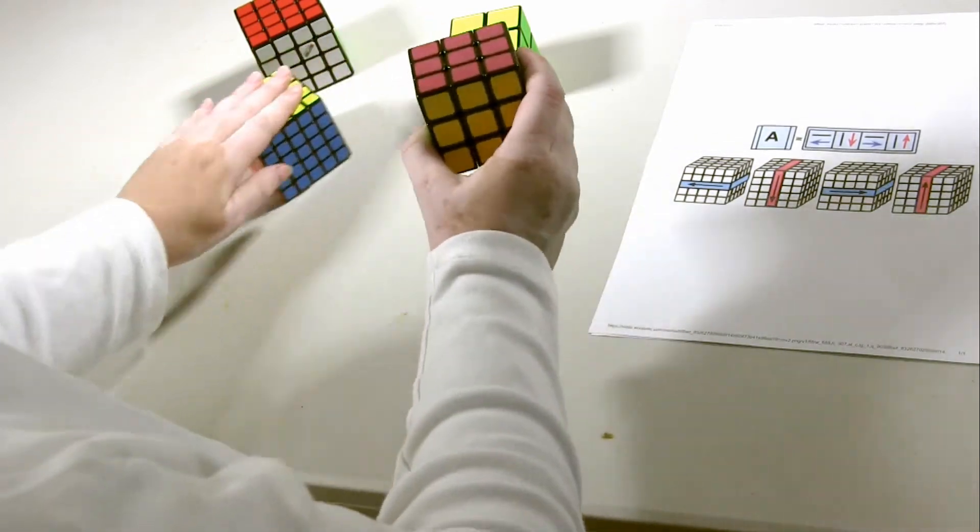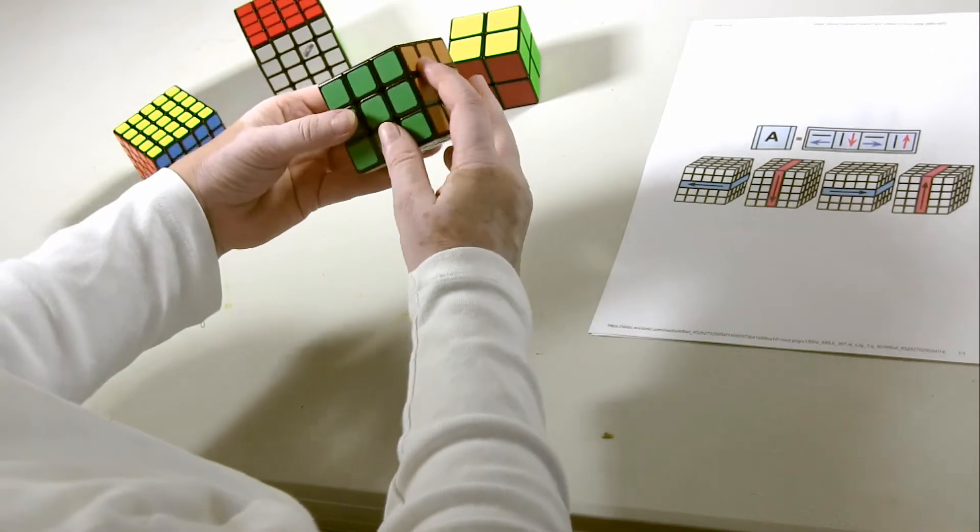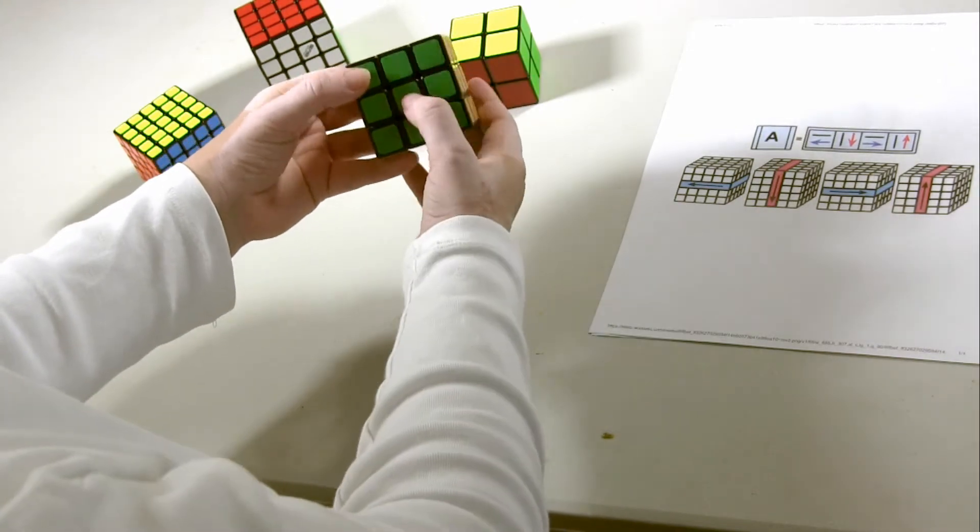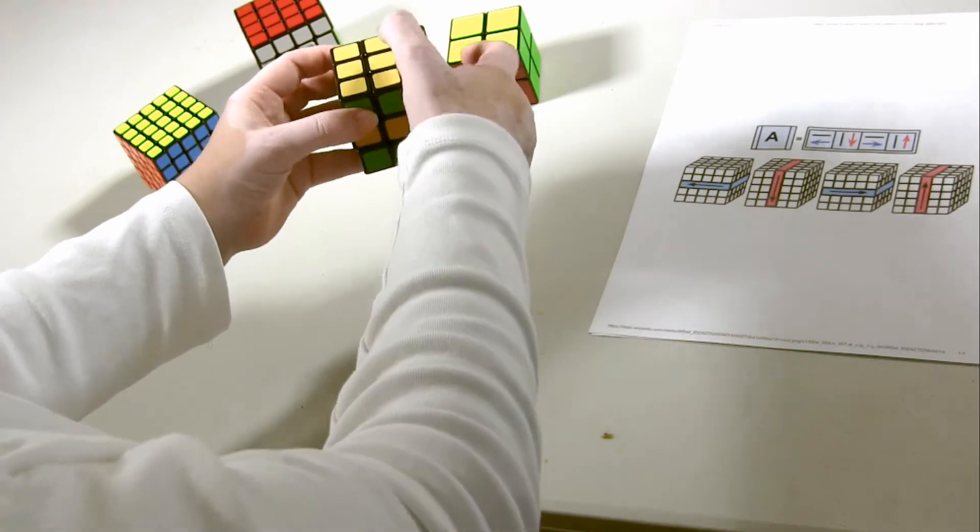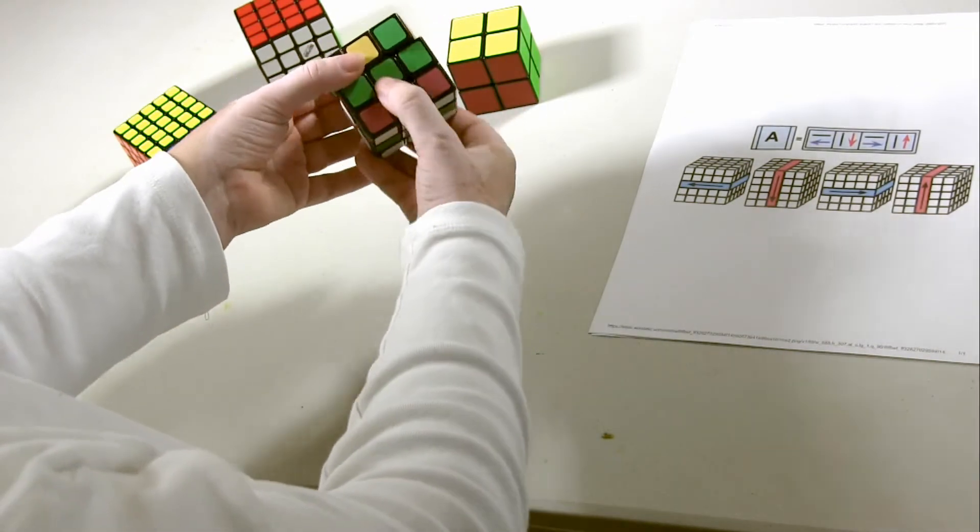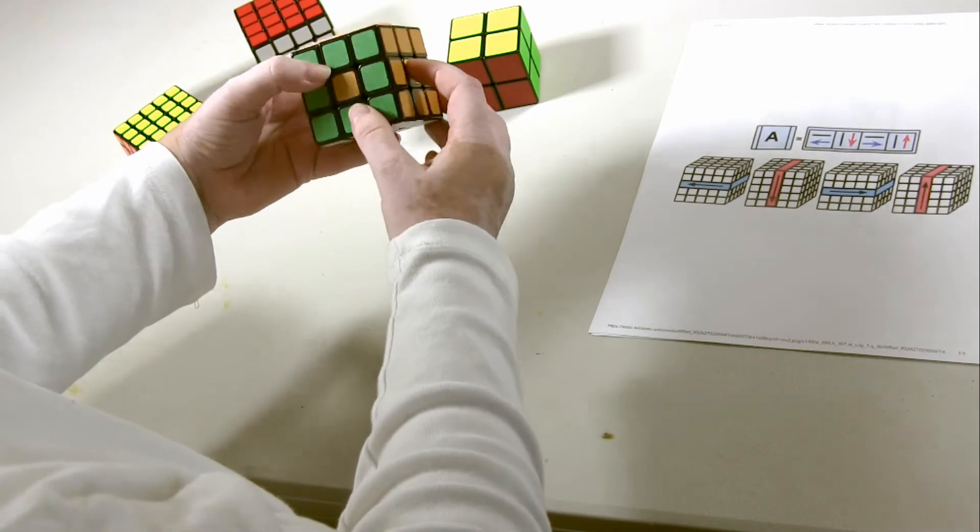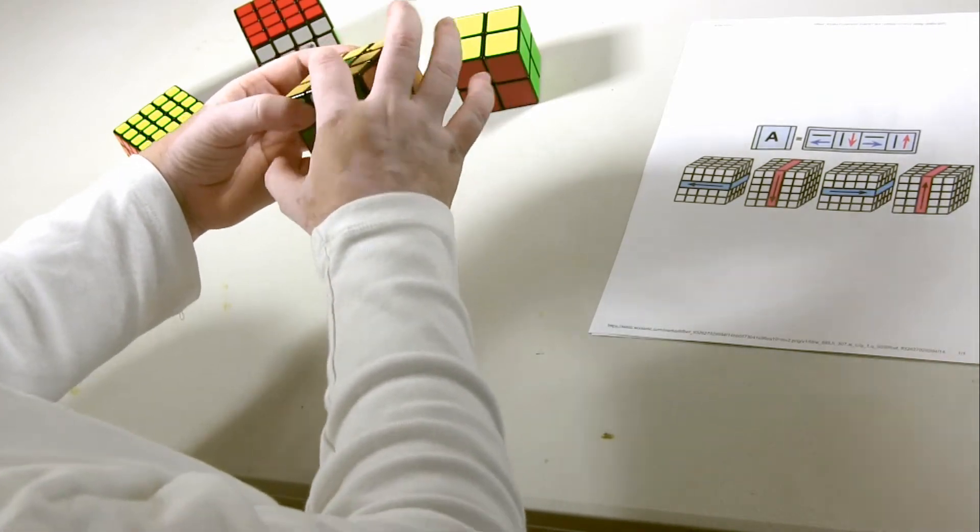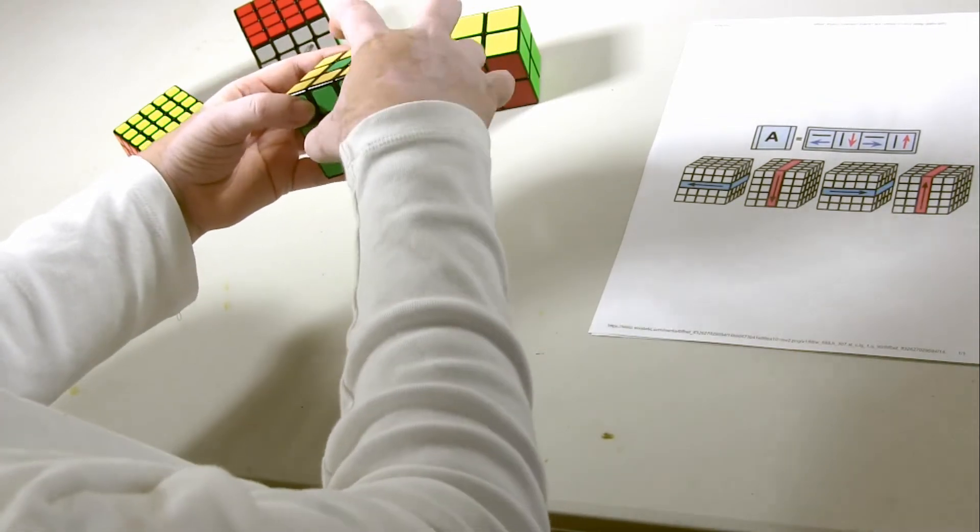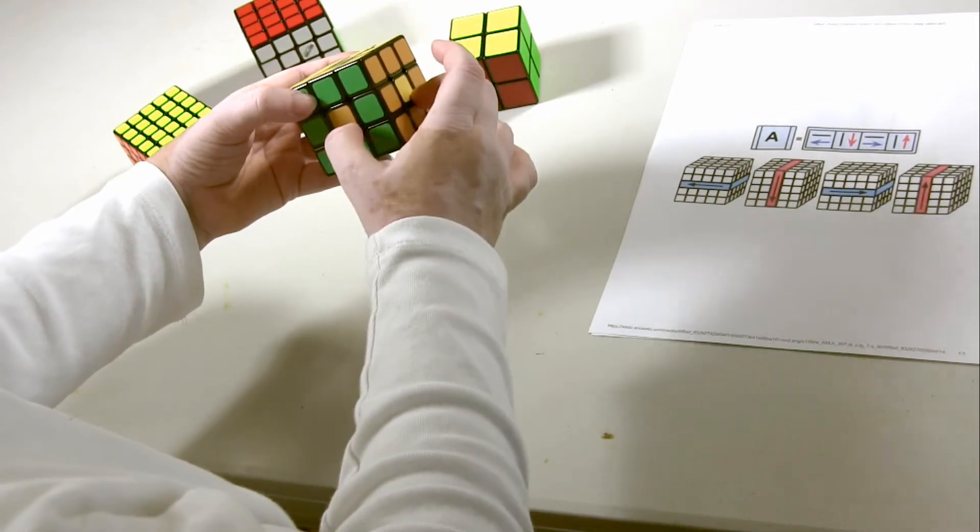It works on every odd numbered cube. Again, you move the piece out of the way, move the space down, move the piece into the space, and move the space back up again. This works on the top front and right.